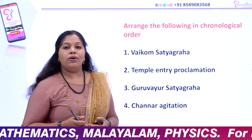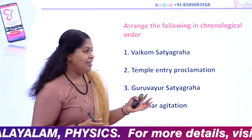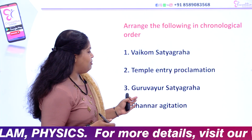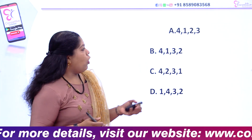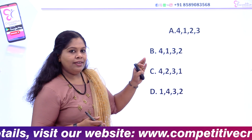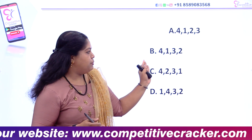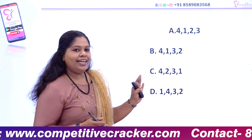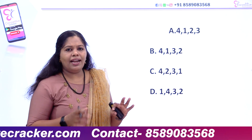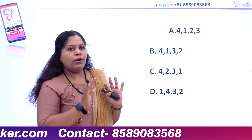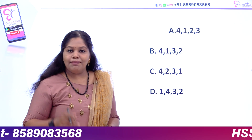Arrange the following in chronological order. After every period of time: the Krenaulogical Proclamation, the Channar Aditation. Here are some options: option one is 4, 1, 2, 3; option two is 4, 1, 3, 2; option three is 4, 2, 3. So if you want to go to the options, you will not have to go to all the options — it will not be just one option.